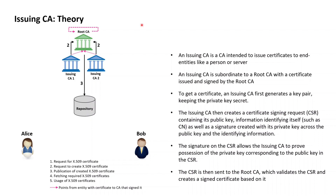An issuing CA first generates a public-private key pair where the private key is always kept private. After creating the key pair, the issuing CA generates a certificate signing request (CSR), which contains the public key of the issuing CA plus identifying information about the issuing CA. The last and quintessential element of the CSR is a signature created by the issuing CA using its freshly generated private key corresponding to the public key contained in the CSR.